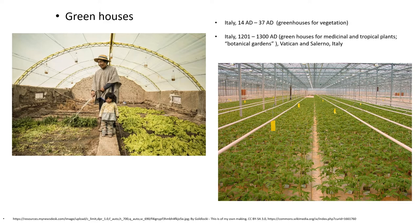In later times the designs were immensely improved, and during the 13th to 14th century AD, true greenhouses were built in Italy and were named as botanical gardens. These were largely developed to store exotic and tropical plants collected from other parts of the world for medicinal research. These modern greenhouses were built with glass roofing and were more efficient in capturing sunlight and warmth. The two early glass houses were built at Vatican and Salerno.